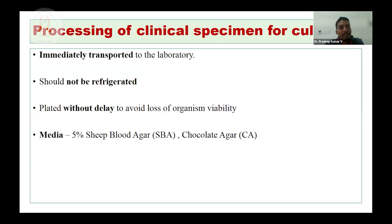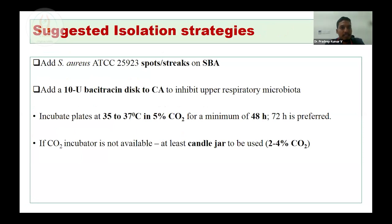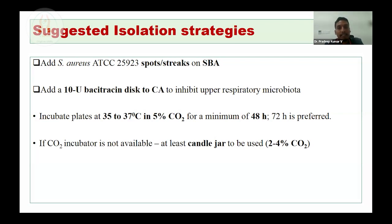Isolation strategies: on 5% sheep blood agar, add a Staphylococcus aureus ATCC 25923 spot or streak. For chocolate agar, particularly for lower respiratory tract specimens, add a 10-unit bacitracin disc to the chocolate agar. Incubation is 35 to 37 degrees Celsius in 5% CO2 for a minimum of 48 hours — 72 hours is preferred. If a CO2 incubator is not available, a candle jar can be used providing approximately 2 to 4% CO2.